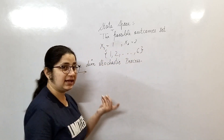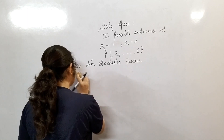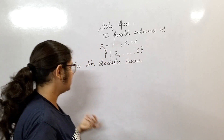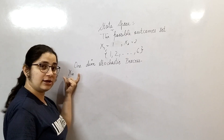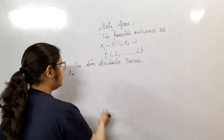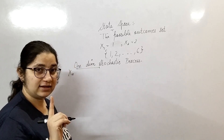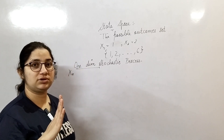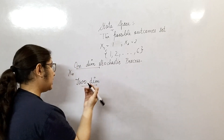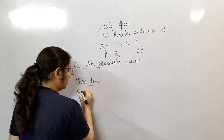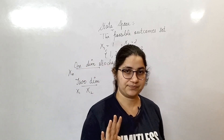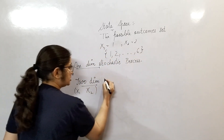One-dimensional means the random variable represents only one thing at a time. For example, consider the maximum temperature of Rohtak right now. My random variable xn is denoting the maximum temperature of Rohtak. At one given time, it will assume only one value — whatever the maximum value is at that time. But if I consider it as two-dimensional, then random variable x1 will represent the maximum temperature and random variable x2 will represent the minimum temperature at the same time. This is a two-dimensional stochastic process.